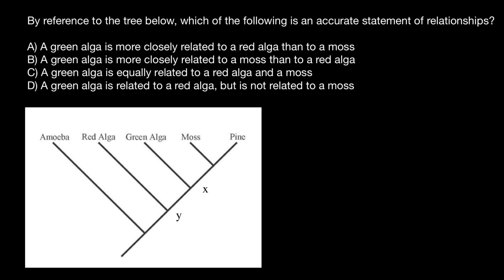So green alga here — we are offered a variant that green alga is equally related to red alga and moss because it is exactly in the middle. And the last variant: a green alga is related to red alga but not related to a moss.